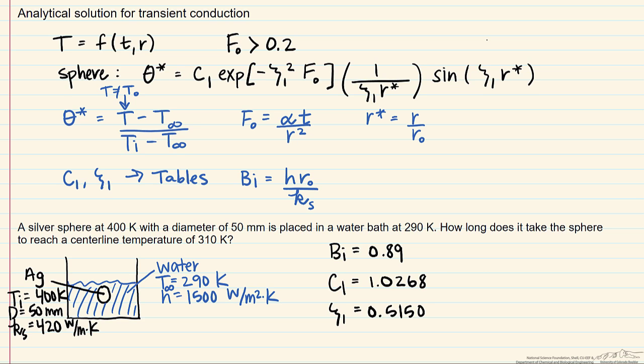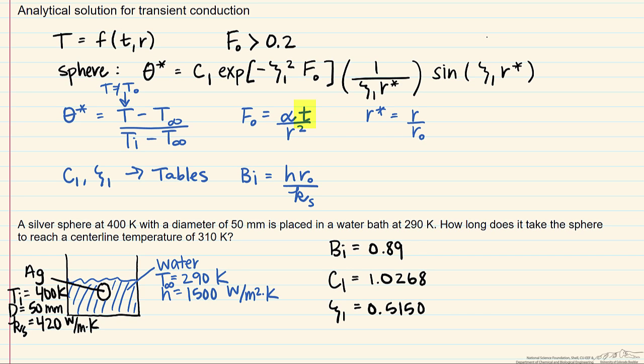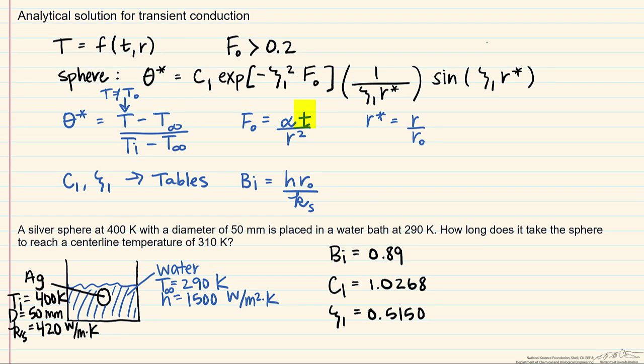What are we looking for? We're looking for the time, and we find the time again in this Fourier number.